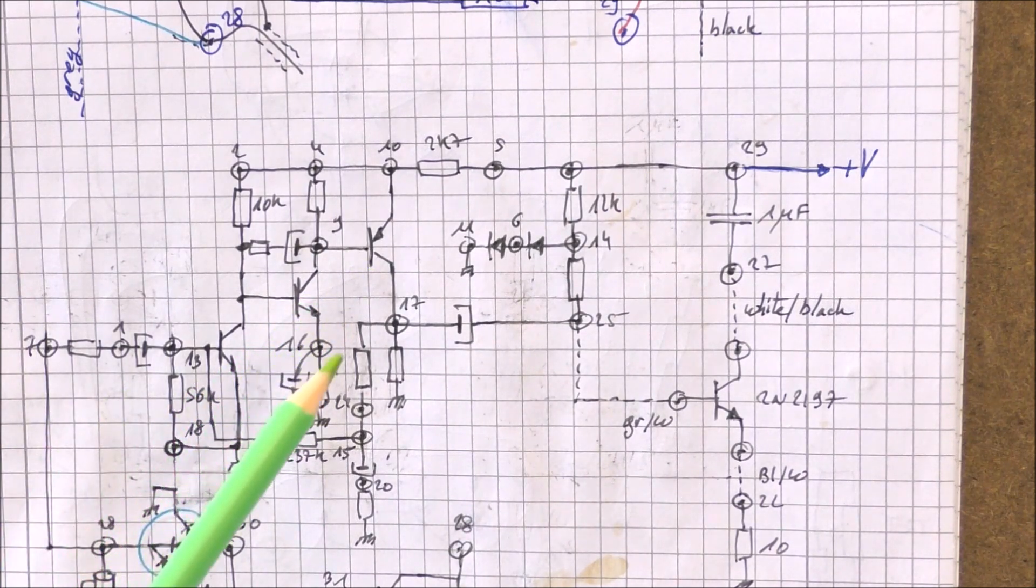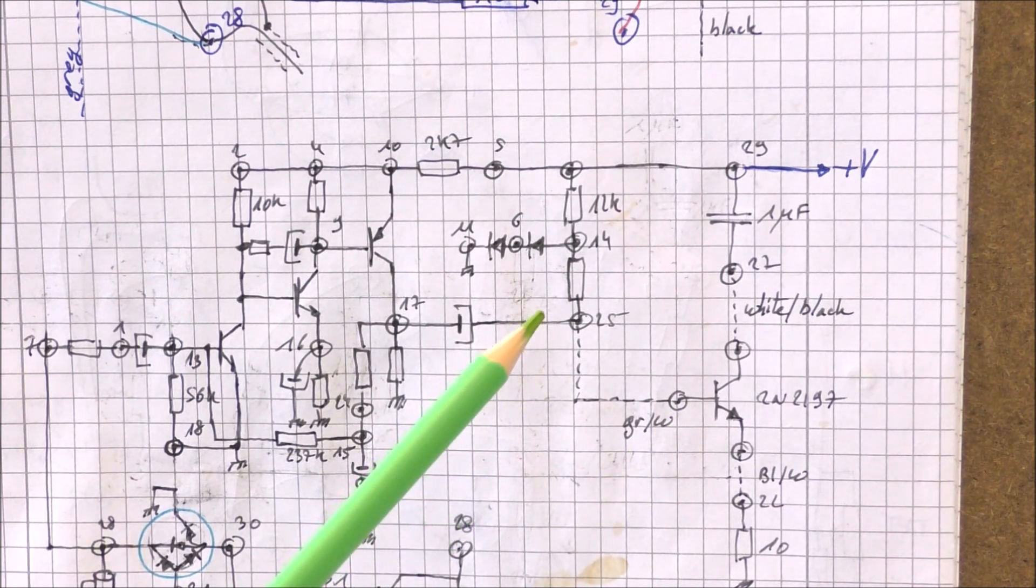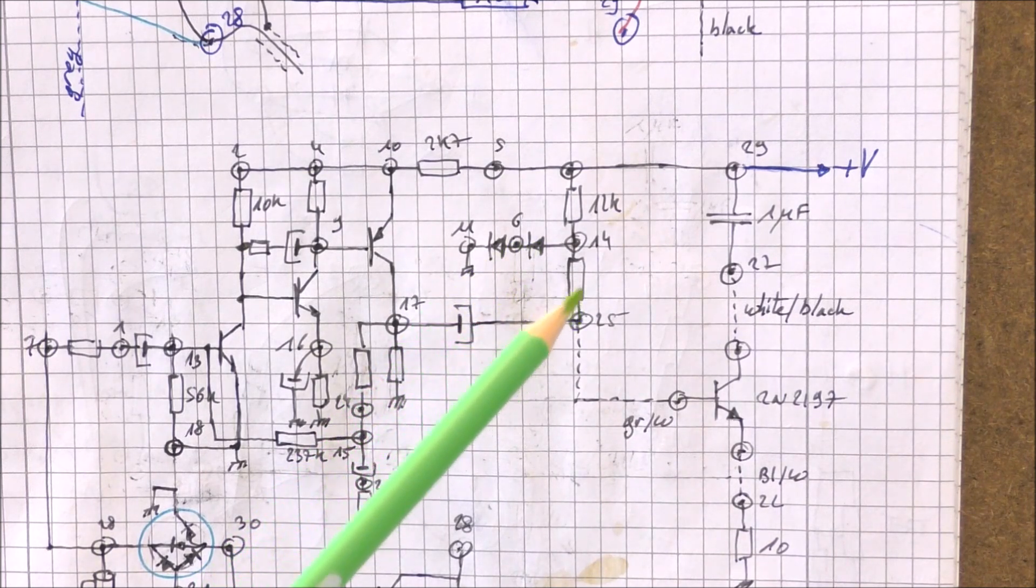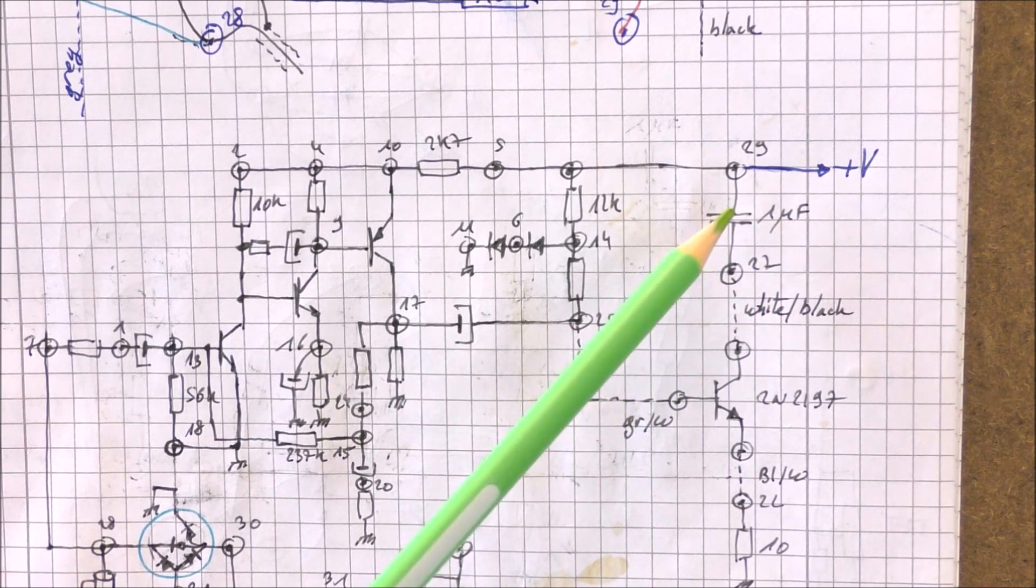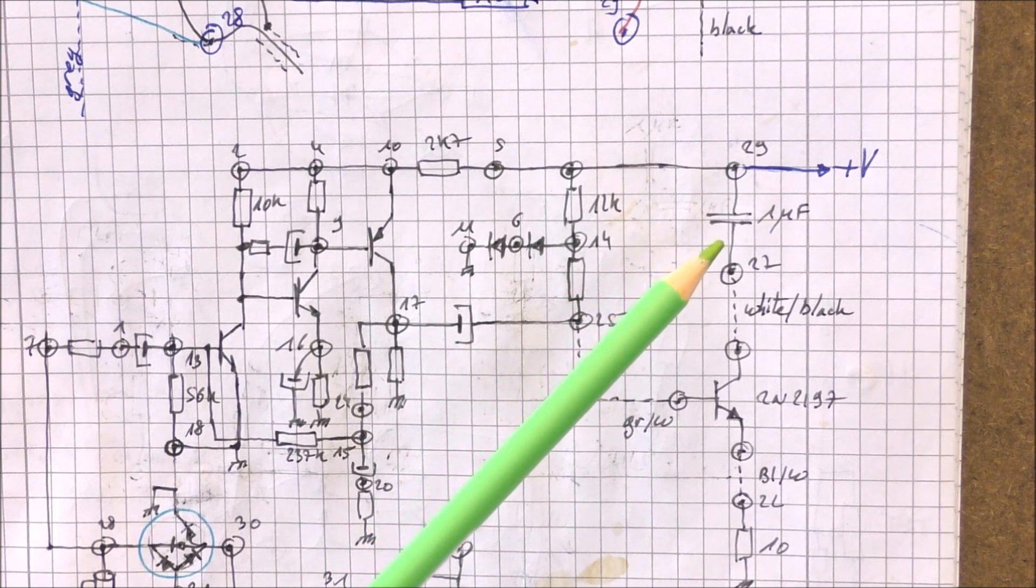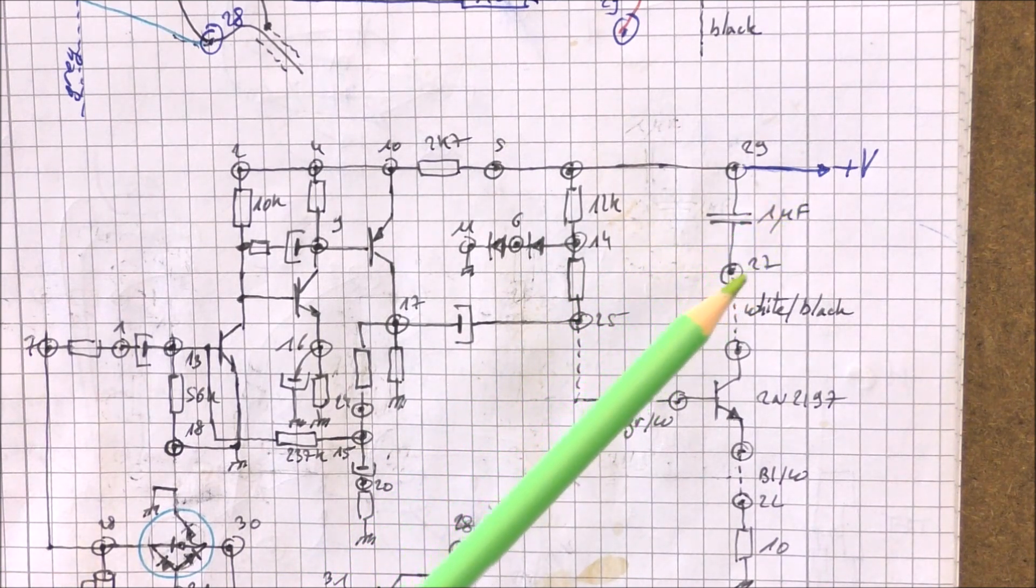This signal is fed to the power stage which is this transistor which is located on the power supply board. This transistor is polarized using these two diodes in series here and these two resistors. The drive winding of the motor is connected in parallel to this capacitor. This capacitor permits to tune the circuit to 400 Hz that uses the inductance of the drive winding of the motor.